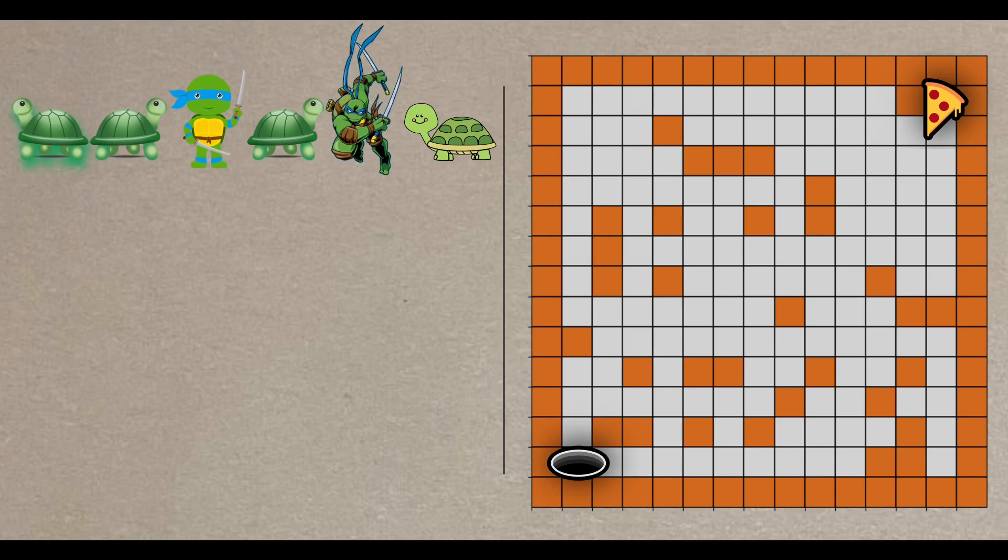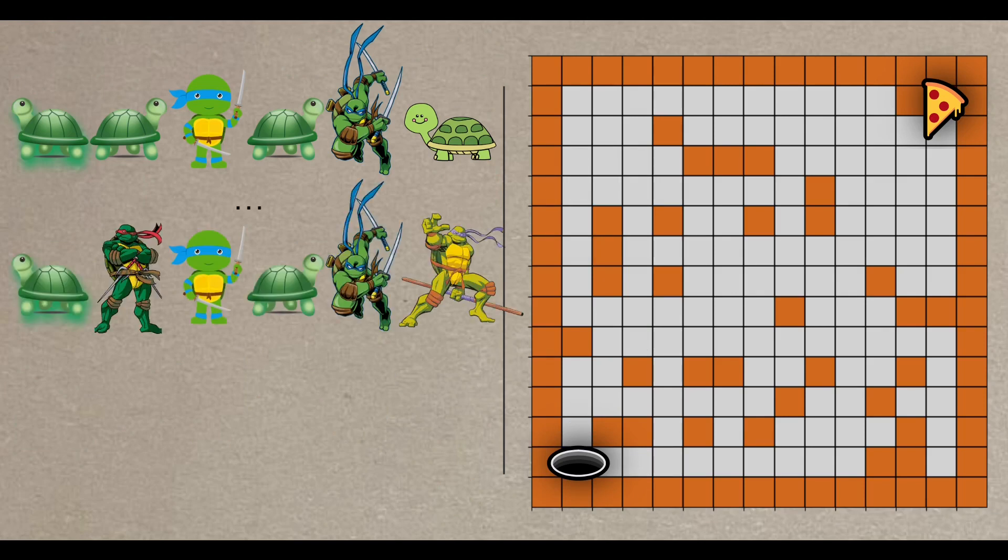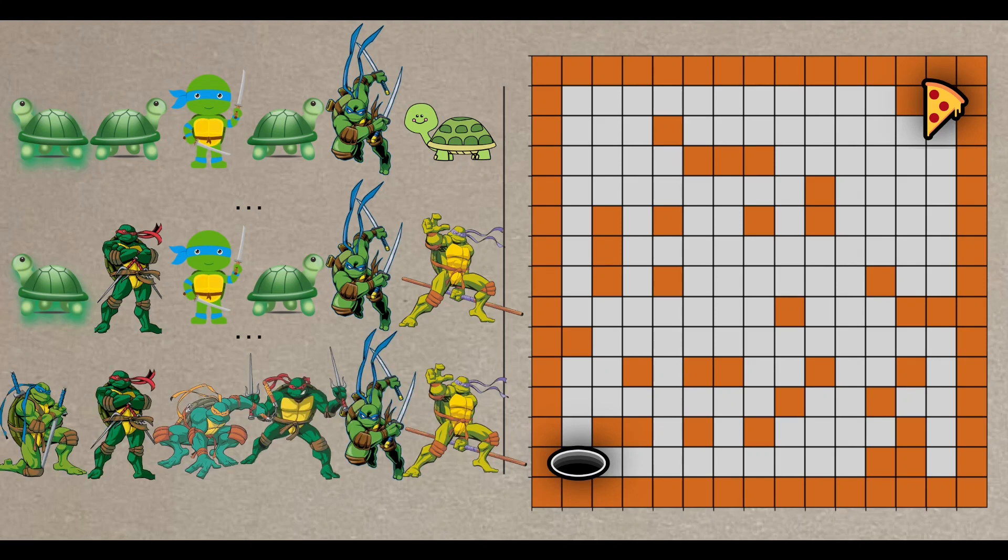Then, we continue generating generations from each offspring until we either reach a plateau in the solution's improvement or we reach a maximum number of generations that we have specified beforehand.